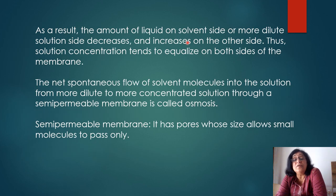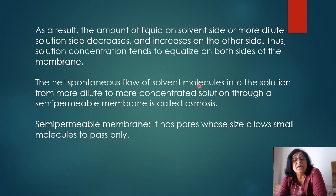As a result, the liquid on the solvent side decreases while the solution side increases, so the concentration tends to equalize on both sides. The net spontaneous flow of solvent into solution — from dilute to concentrated solution through a semi-permeable membrane — is called osmosis. A semi-permeable membrane has pore sizes that allow small solvent molecules to pass through but not large solute molecules.